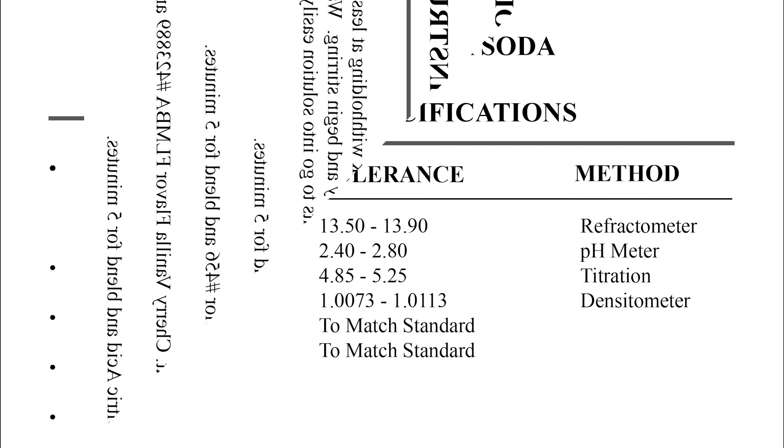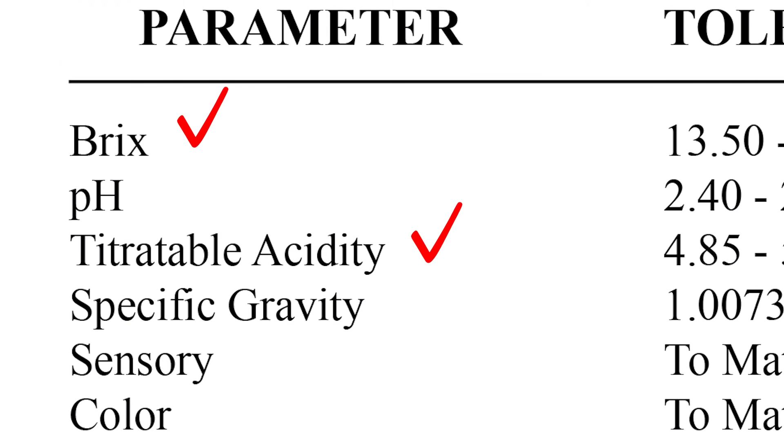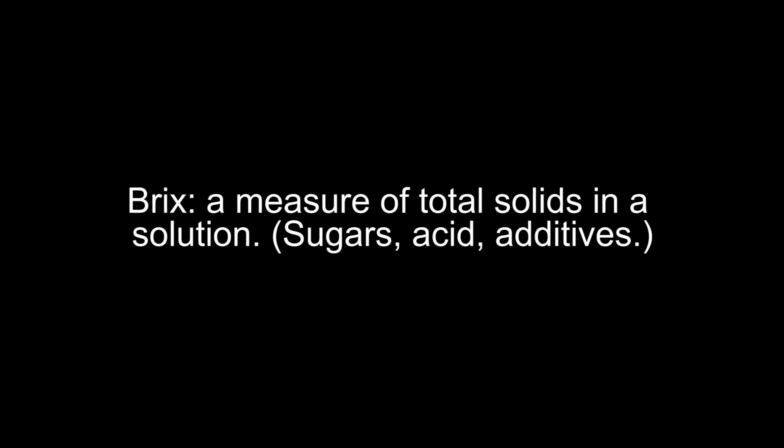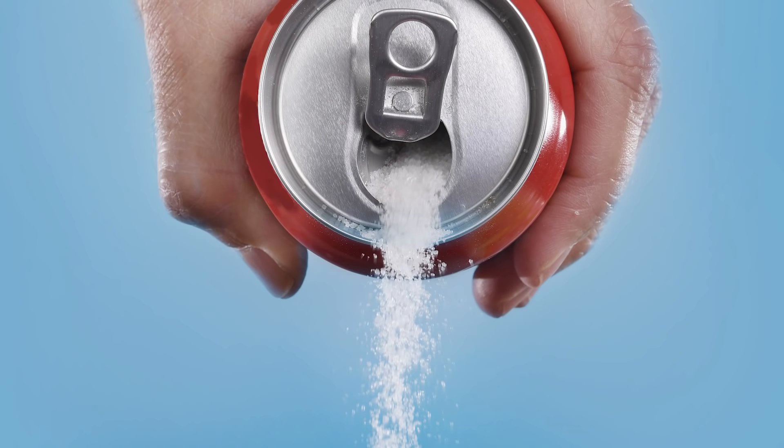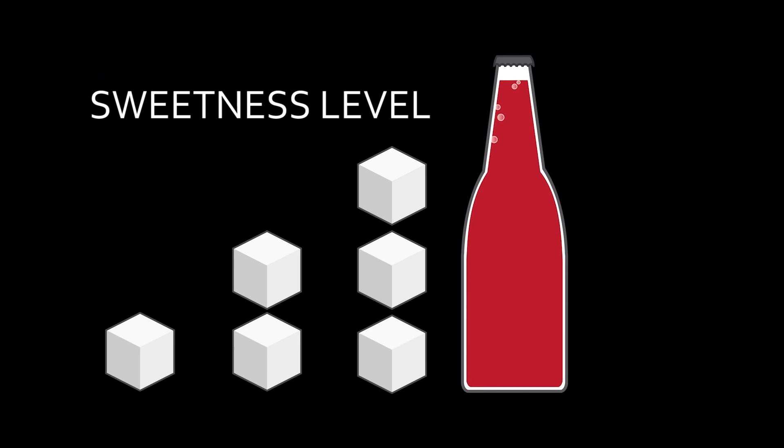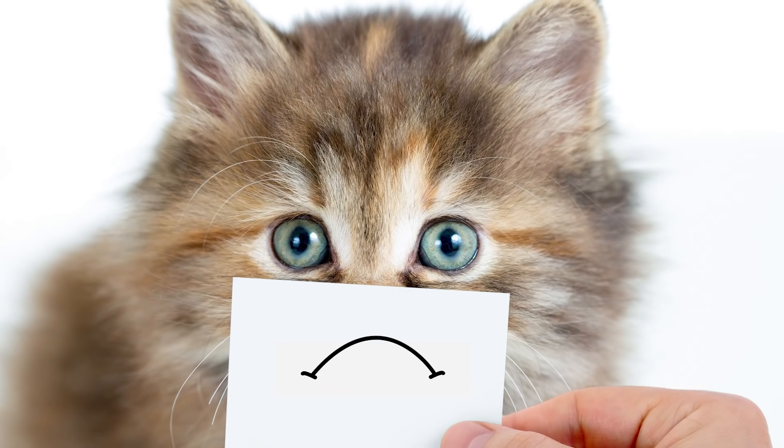So what are these parameters? Mainly, Brix, titratable acidity, pH, and specific gravity. Brix is the measure of total solids dissolved in a solution, like sugar, acids, or other dry ingredients. It mainly measures sugar levels, so it's the best indicator of sweetness level. And not to be confused with bricks, which are also solid, but don't taste as good.